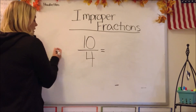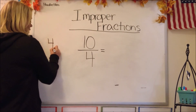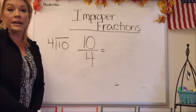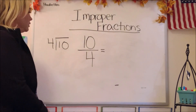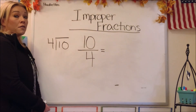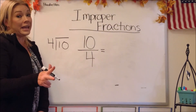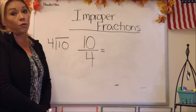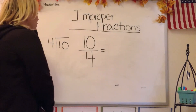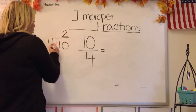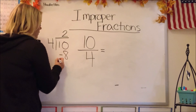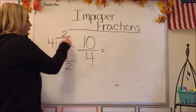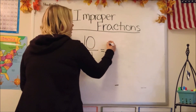Step number one: divide the denominator into the numerator. How many times can 4 go into 10 evenly? Well, 4 times 1 is 4; 4 times 2 is 8. If we did 4 times 3, that would go over because 4 times 3 is 12. So evenly, we can go just twice — 2 times 4 is 8 — and that gives us a remainder of 2. So it can go in 2 times, which is going to be our whole number.